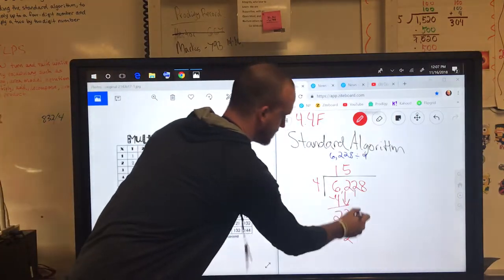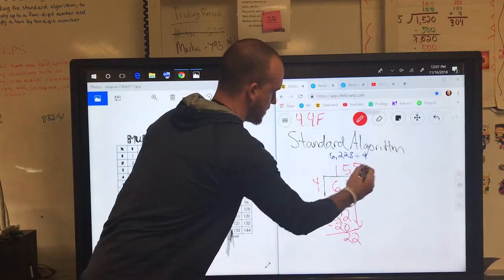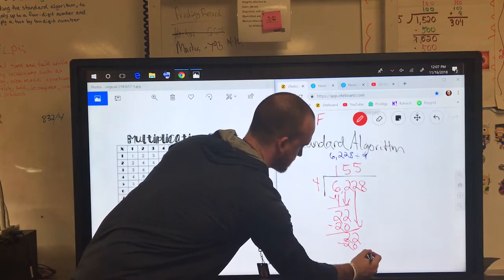Now I'll bring this 2 down. Makes 22 again, so that's the same thing. I'll put another 5. 4 times 5 is 20, that's what I subtract. I get 2.